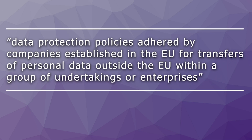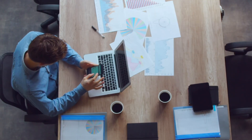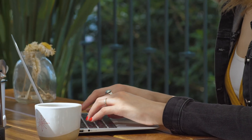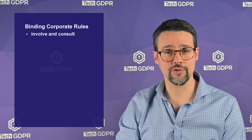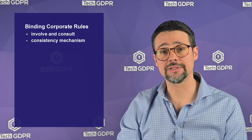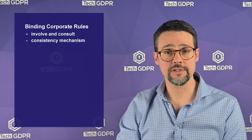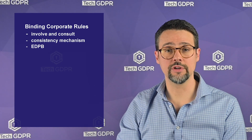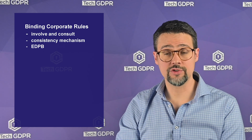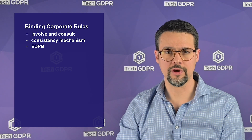Binding corporate rules are defined by the European Commission as data protection policies adhered to by companies established in the EU for transfers of personal data outside the EU within a group of undertakings or enterprises. This means there are a set of legally binding rules and policies for transfers of data internally — meaning within members of the same corporate group. According to Article 47, these BCRs need to be sent for prior approval to competent supervisory authorities, which may then need to involve and consult other supervisory authorities in accordance with the consistency mechanism set out in Article 63, which requires these authorities to cooperate. The competent authority will then communicate its decision to the European Data Protection Board, which will issue an opinion about the BCRs. Once finalized to include this opinion, the supervisory authority can approve the BCRs, making it possible for the company to implement them.